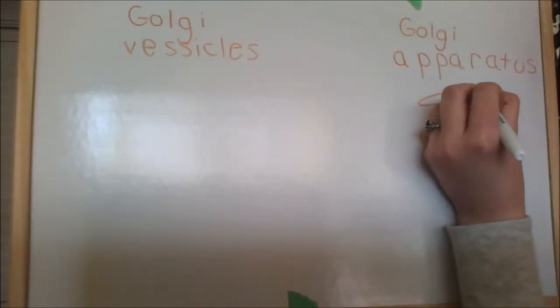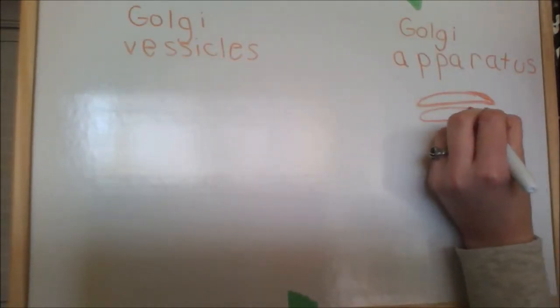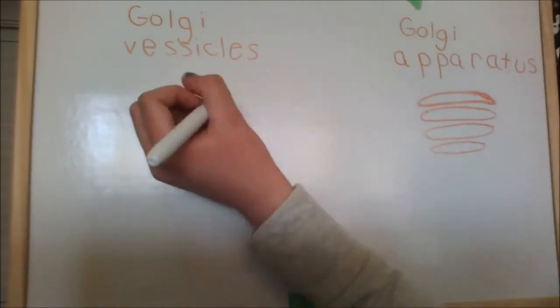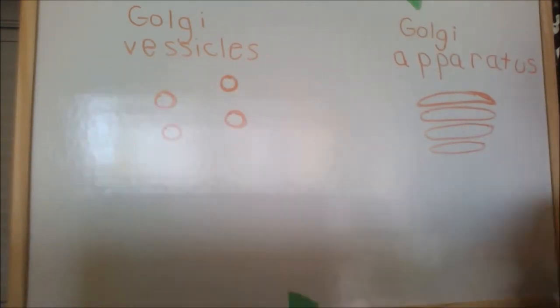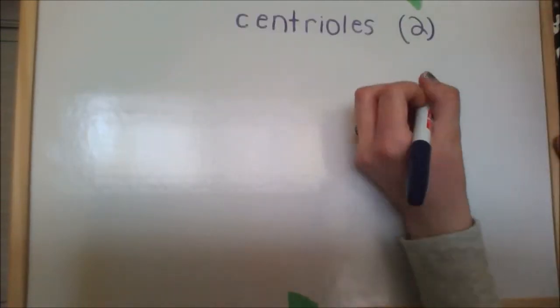The Golgi complex is a flat and layered cyclic organelle that looks like a stack of pancakes. It produces the membranes that surround the lysosomes. It packages proteins and carbohydrates into membrane-bound vesicles for export from the cell.